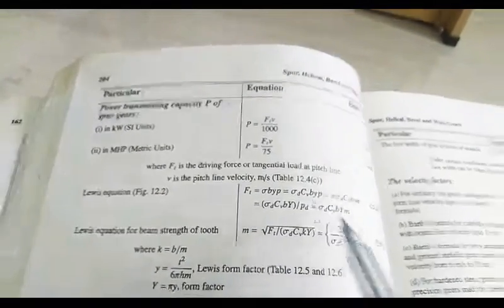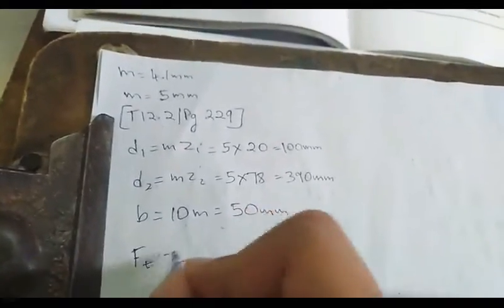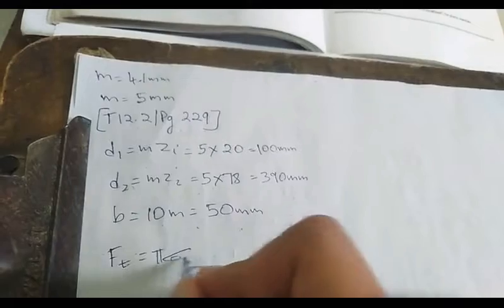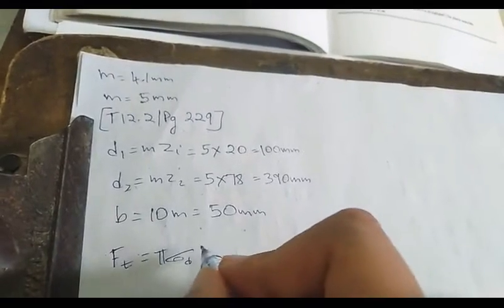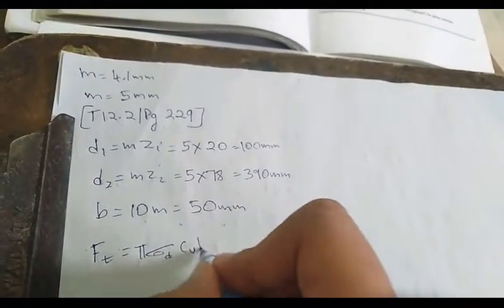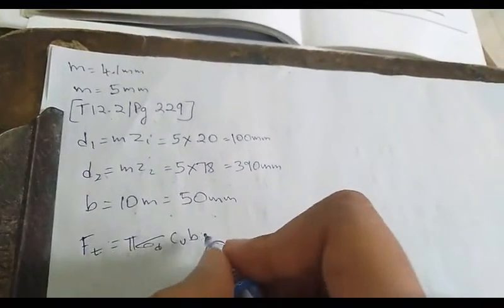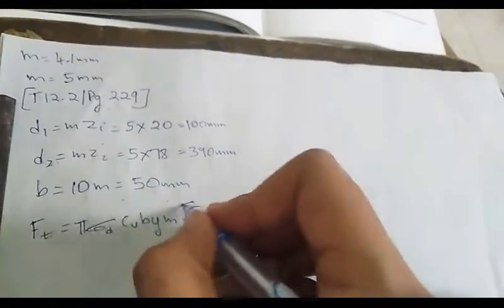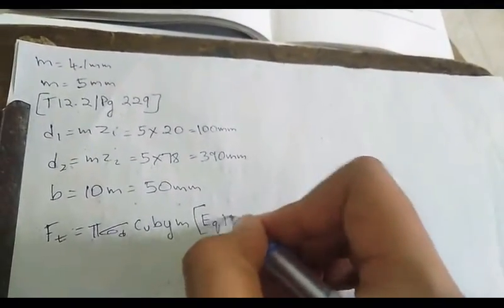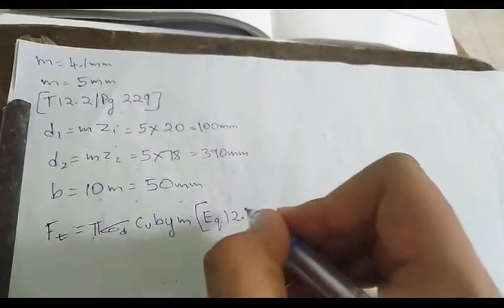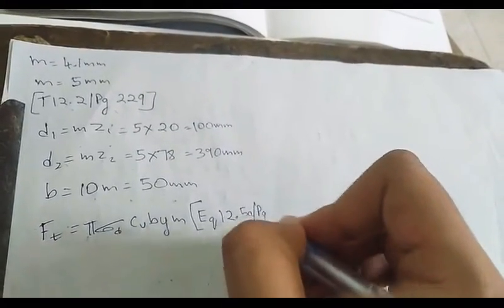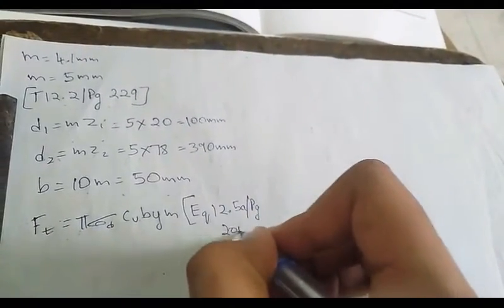The Lewis equation gives σd. We take for allowable stresses: ft = φ · σd · Cv · b · y · m. This is equation 12.5a, page number 204.